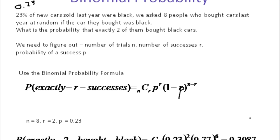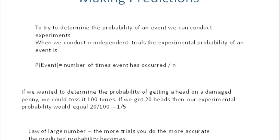So that's binomial probability. Now, making predictions. To try to determine the probability of an event, we can conduct experiments. When we conduct n independent trials, the experimental probability of the event is the number of times that thing occurred divided by the number of trials. For example, tossing a coin 100 times — if you got 51 heads, the experimental probability would be 51 over 100, which is 0.51.